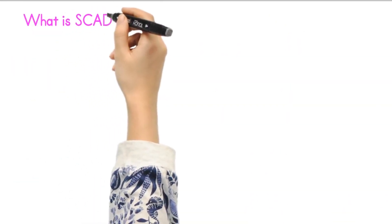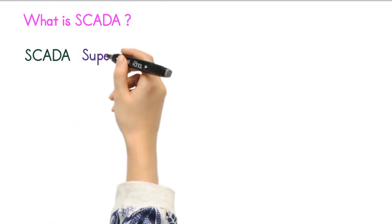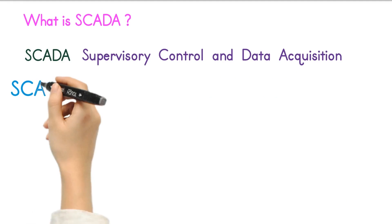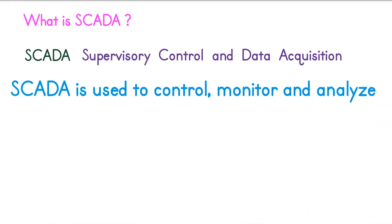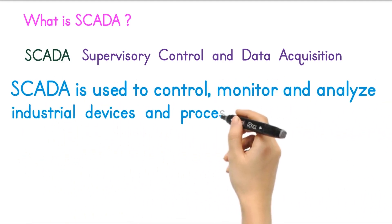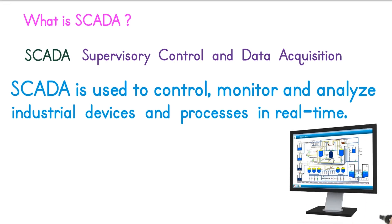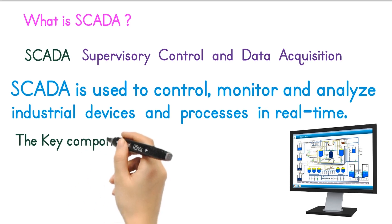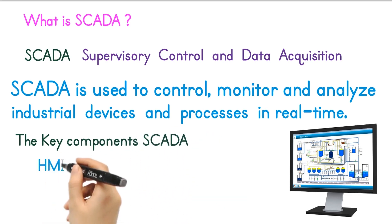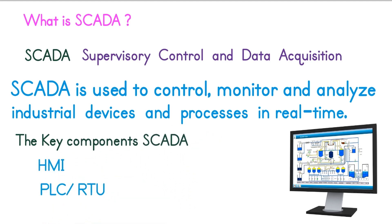What is SCADA? SCADA stands for Supervisory Control and Data Acquisition. SCADA is used to control, monitor, and analyze industrial devices and processes in real-time. It uses computers and software to monitor and control industrial processes, and collects data from remote and on-site PLCs or sensors. The key components of a SCADA system are HMI, PLC or RTU, and communication links or networks.